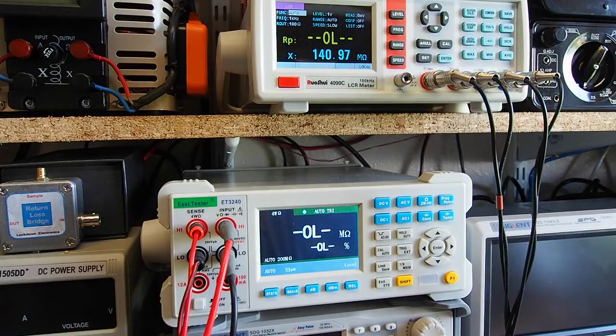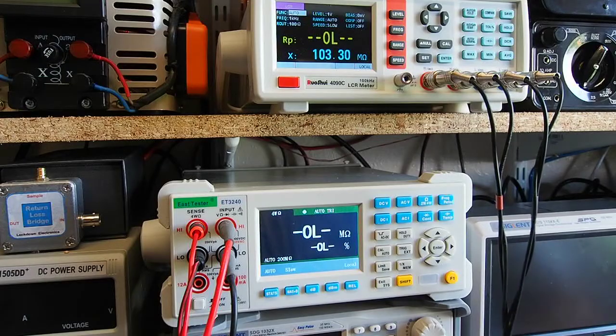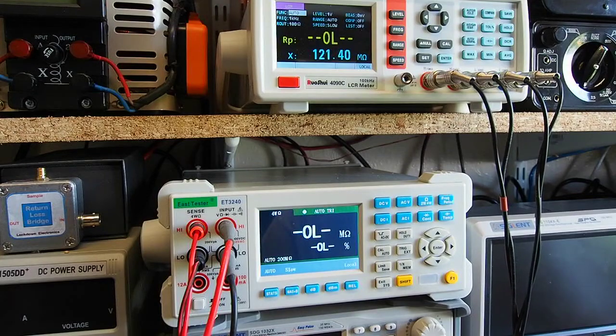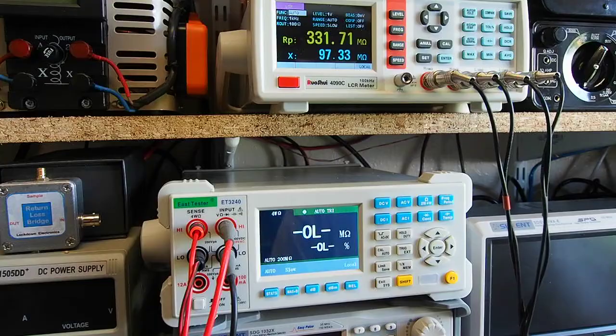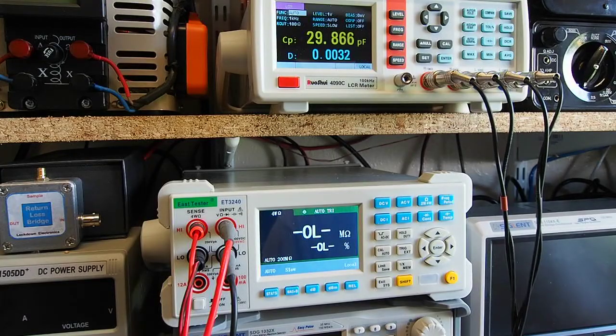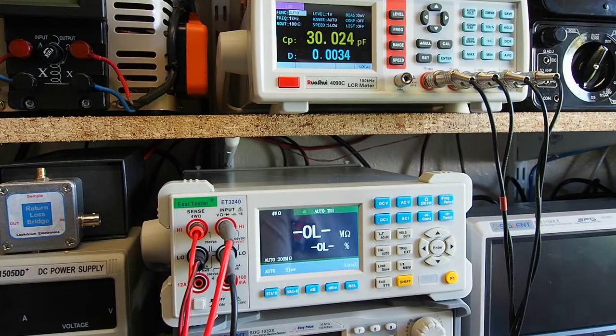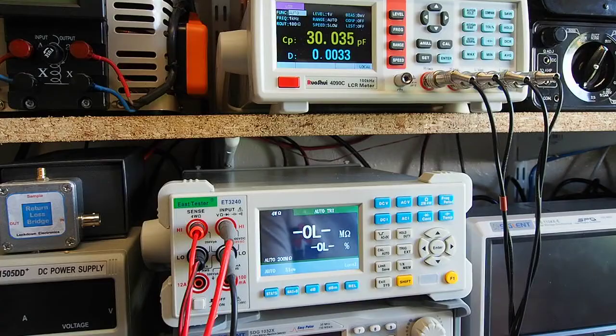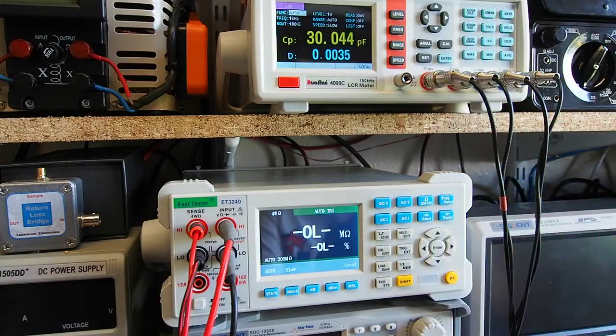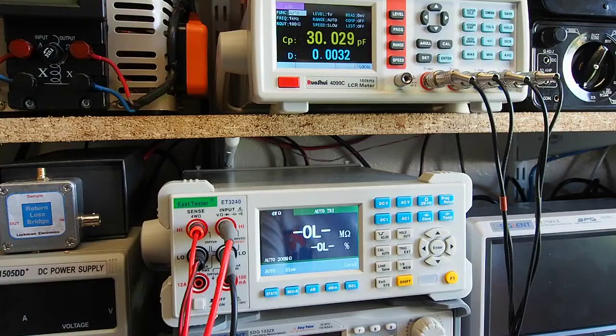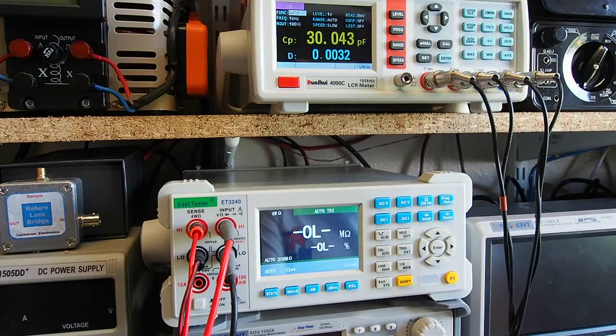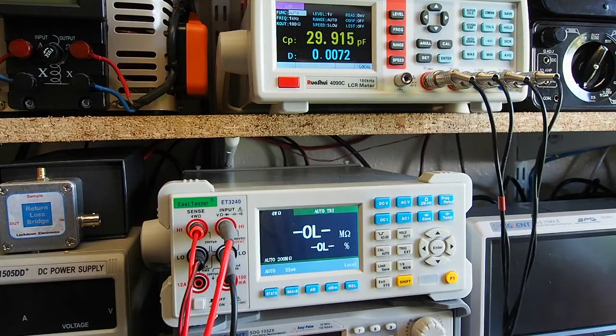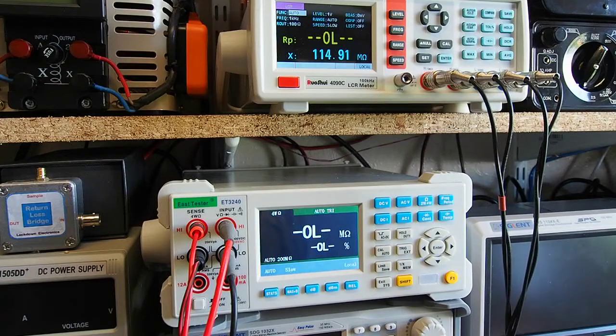So I'm just going to carefully feed these two 15 puff capacitors onto the LCR meter. Getting the Kelvin clips to grab both at the same time isn't the easiest of jobs but okay. So the LCR meter makes that 30 picofarads. The TC1 was saying about 26, so yeah considering that's such a small value that's probably not too bad. So it starts to work from I don't know 20-25 picofarads and upwards, so hopefully that's a useful range.